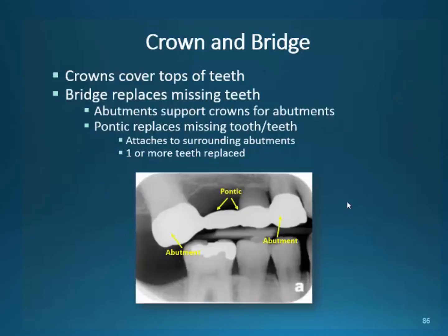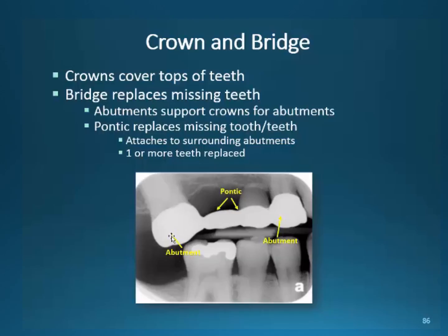Crowns and bridges are also identified by each particular part that creates the bridge. They replace missing teeth — the abutments support the crowns and the pontic replaces the missing teeth. In this particular four-unit bridge, we have two abutments and two pontics. Note that there is another type of material creating the illusion of a false tooth — this is porcelain or some other type of acrylic. This whole bridgework looks like it is made out of gold. We would know for certain if we did a visual exam to confirm.